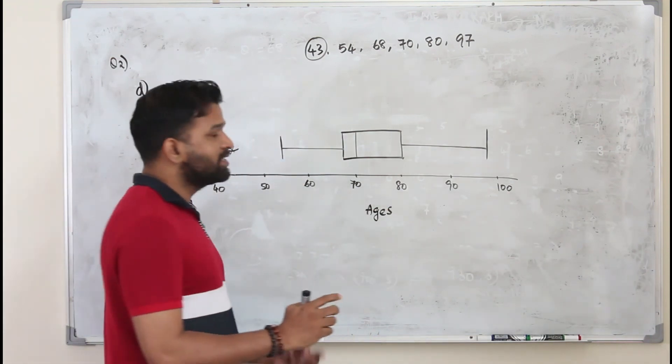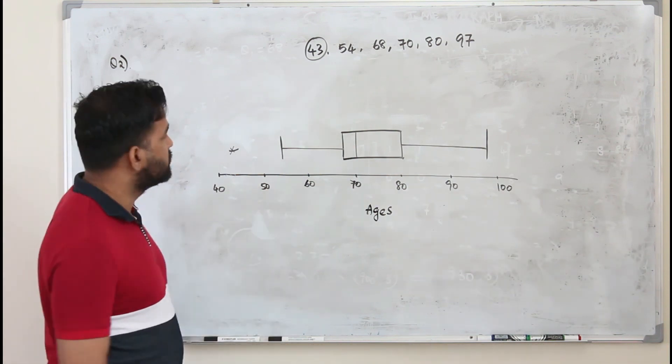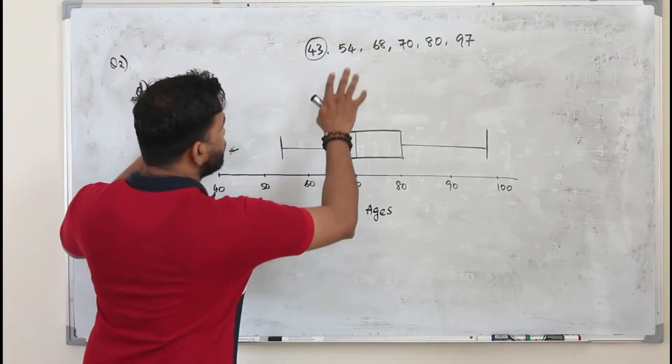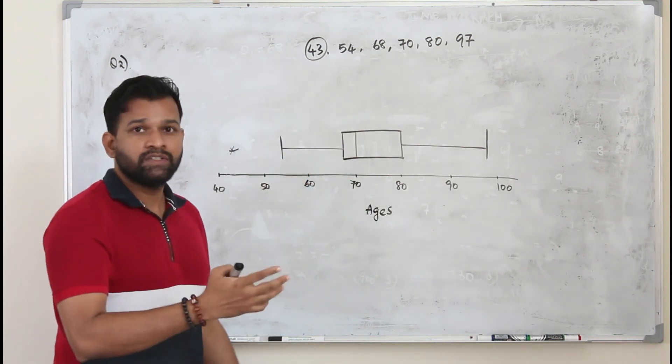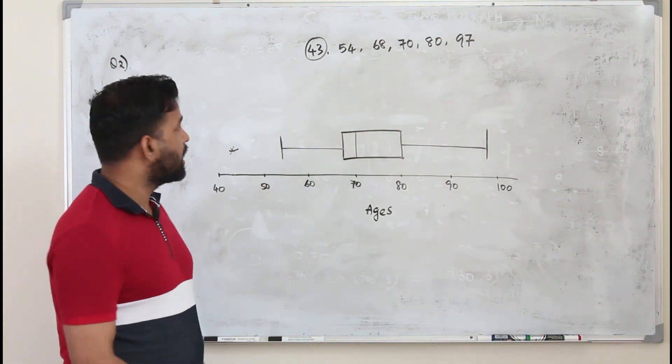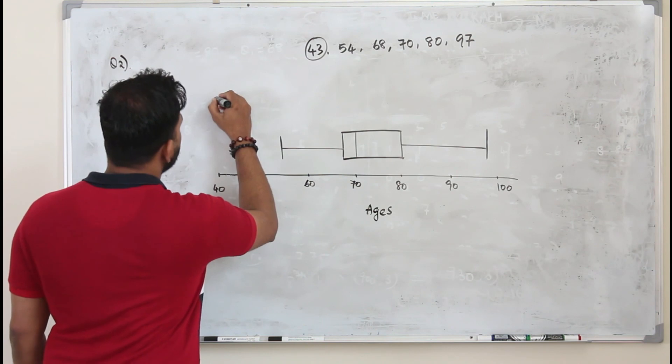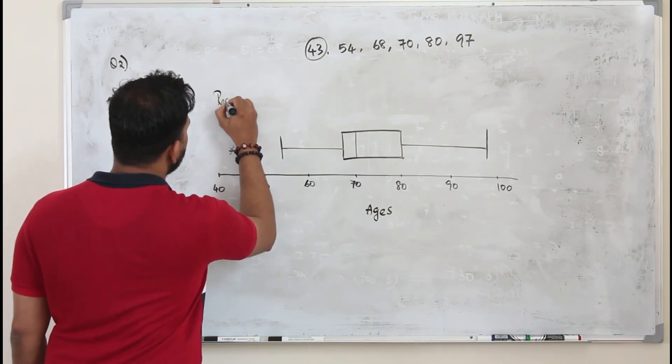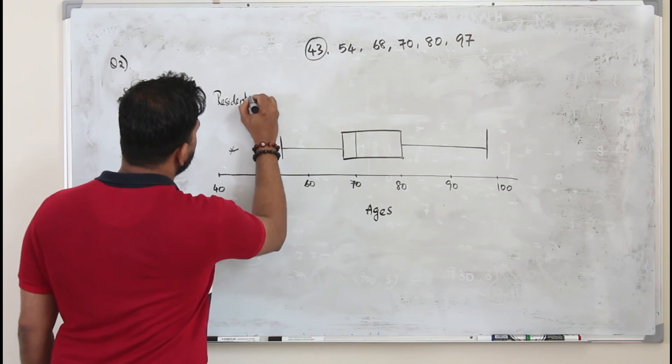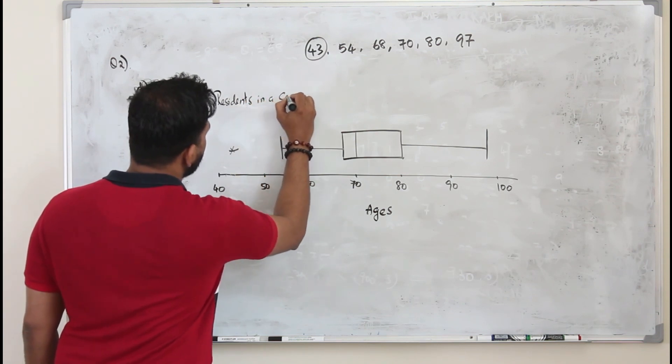And always give a title to your box and whisker plots. This set of data is talking about ages of residents in a care home. So you can just put a care home or residents in a care home. Care home.